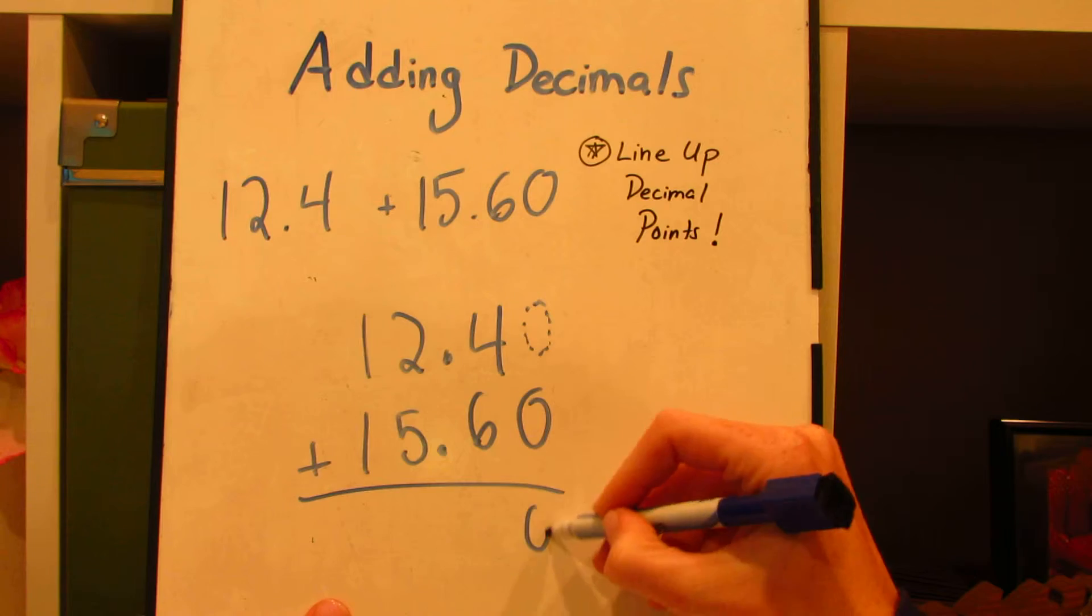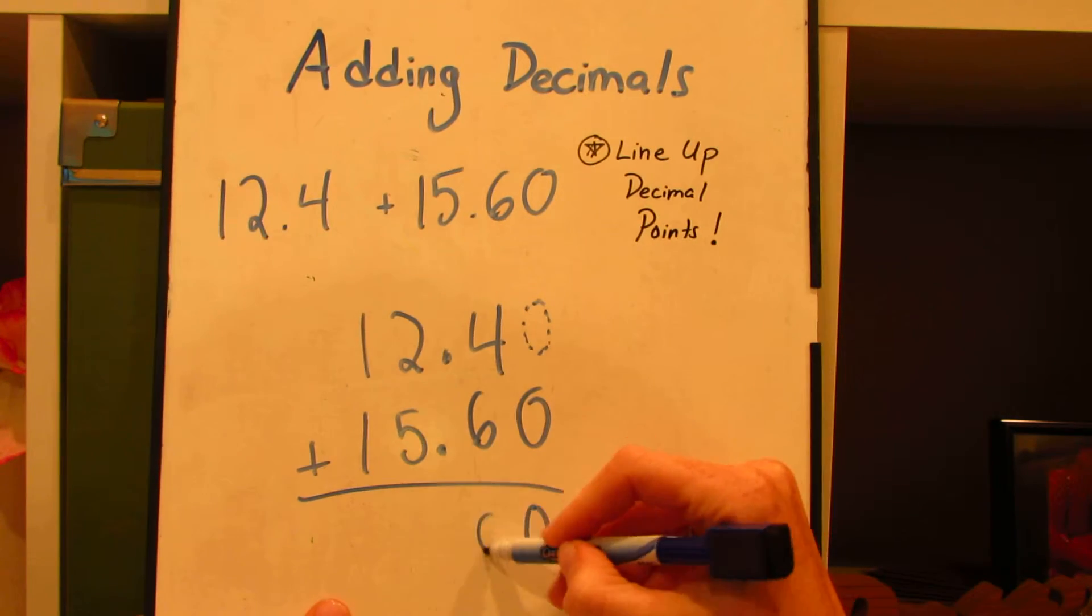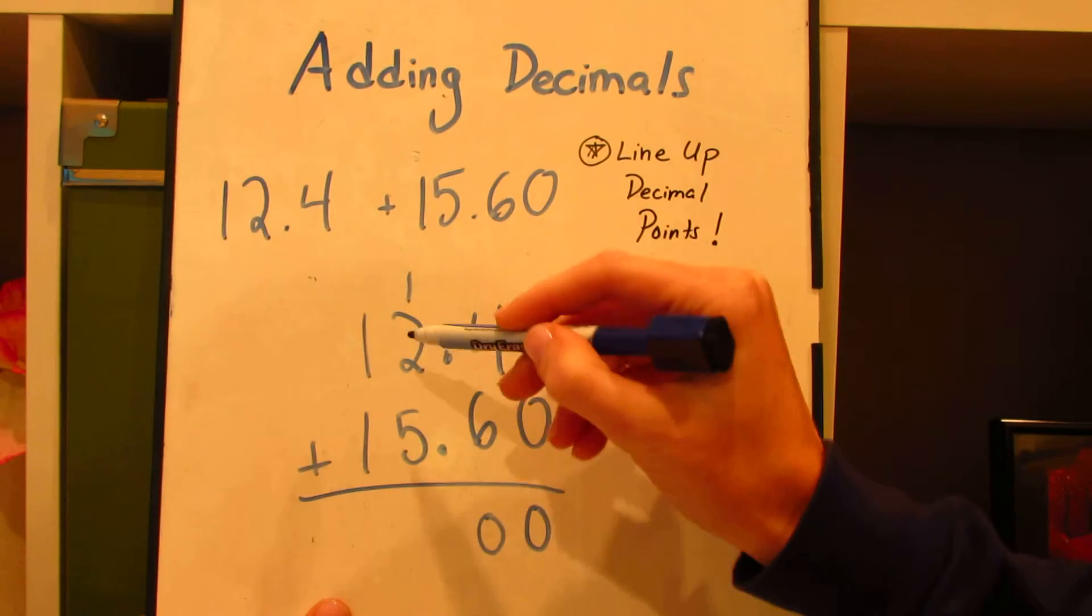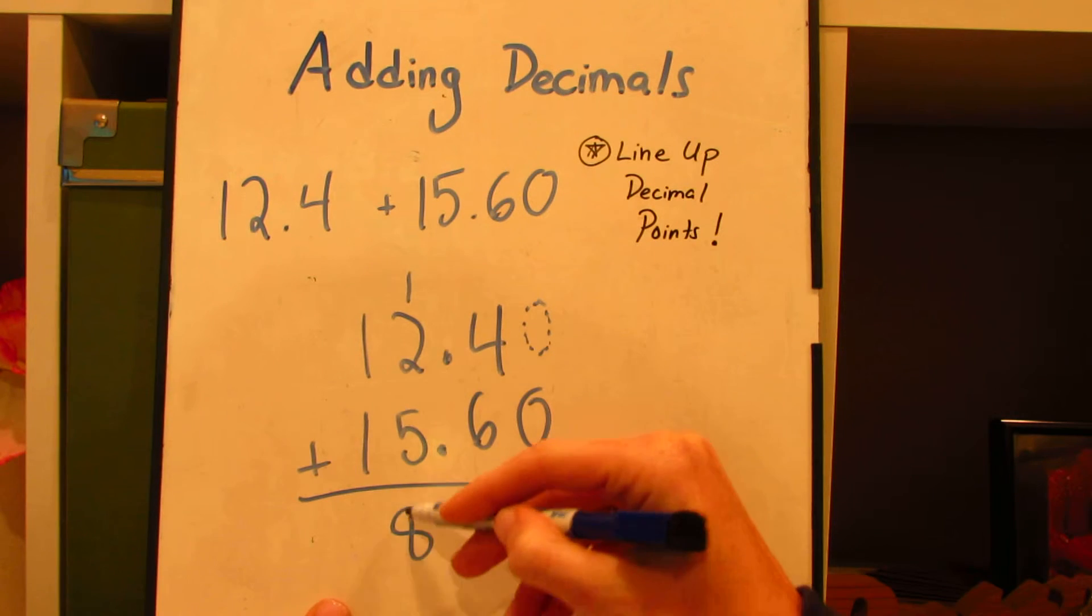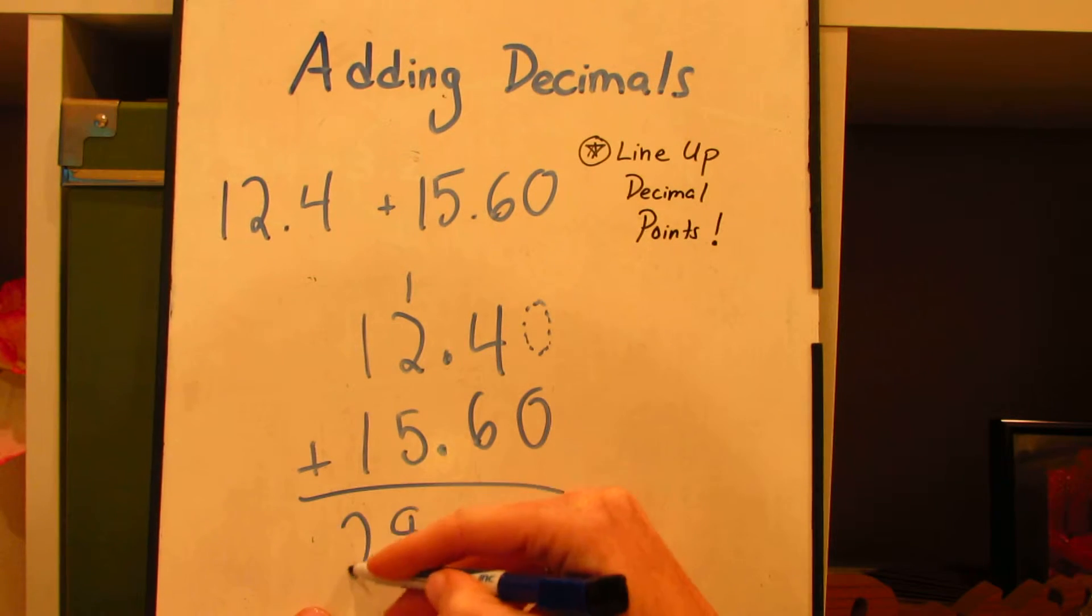0 plus 0, well that's still 0. 6 plus 4, that's 10. 5, 6, 7, one more makes 8. And 1 and 1 makes 2.